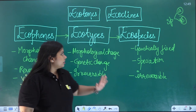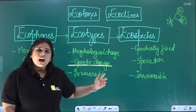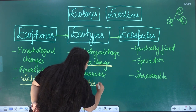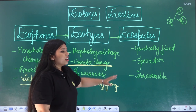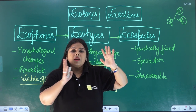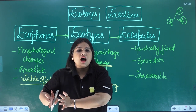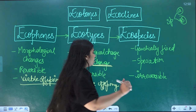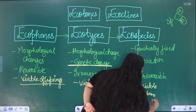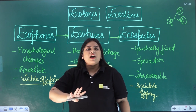Now for Ecotypes, which involve genetic fixation — will the offspring be viable? When eco-species interbreed, or eco-types breed with other eco-types or eco-species, viable offspring will not be produced because genetic differences arise. So the difference is clear among all three: ecophene, ecotype, and eco-species. Ecophene leads to ecotype, and ecotype leads to eco-species.